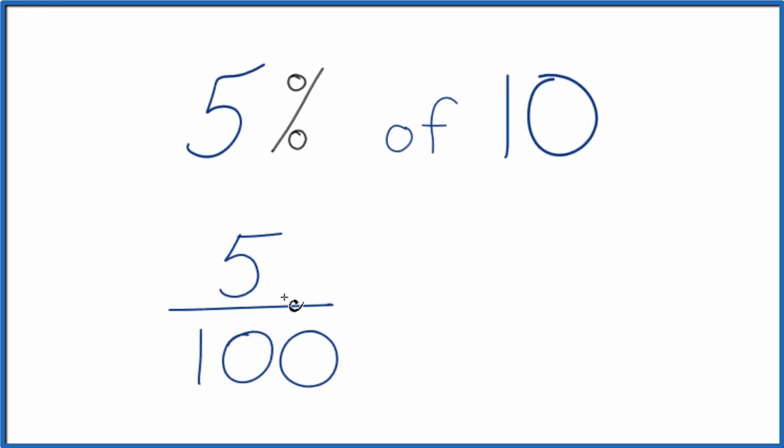5 over 100, which is a fraction, 5 hundredths. So that's 5%. The of, think about that as multiplication. We're going to multiply times 10.